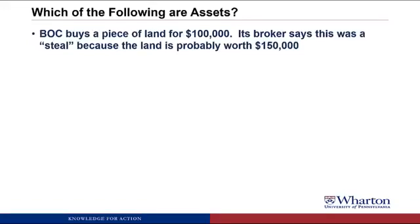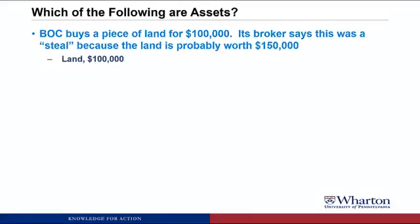BOC buys a piece of land for $100,000. Its broker said this was a steal because the land is probably worth $150,000. This is an asset which we'll call land. It meets the first criteria because there was a market transaction where we acquired ownership. The value of the benefits is assumed to be what we paid — $100,000. We ignore what the broker thinks the land is worth because that's not what we paid in the market transaction. We use the more objective number of what we actually paid.